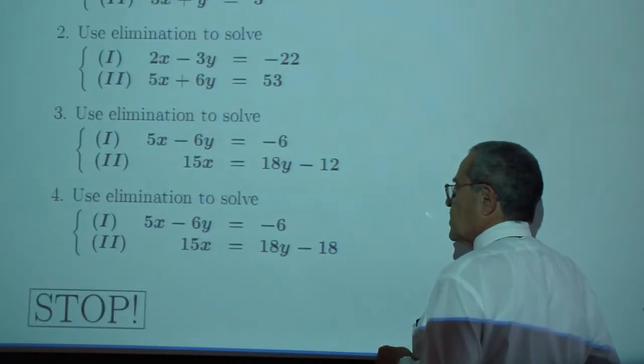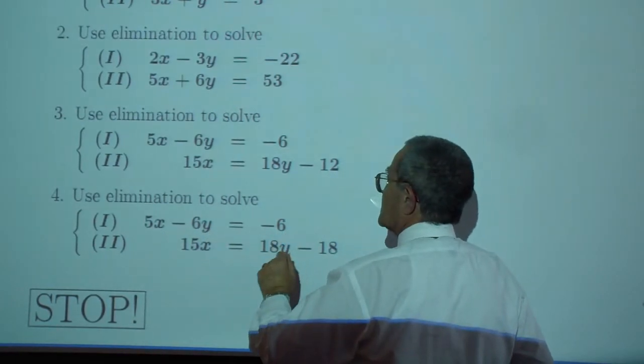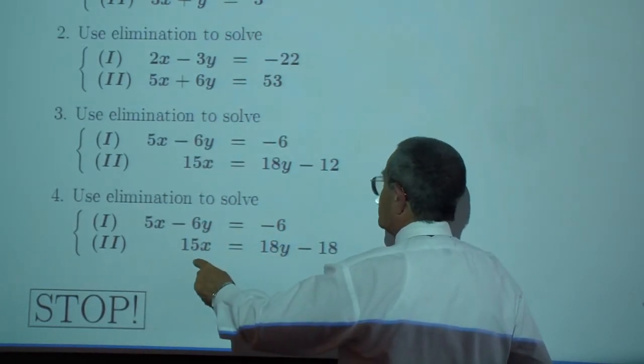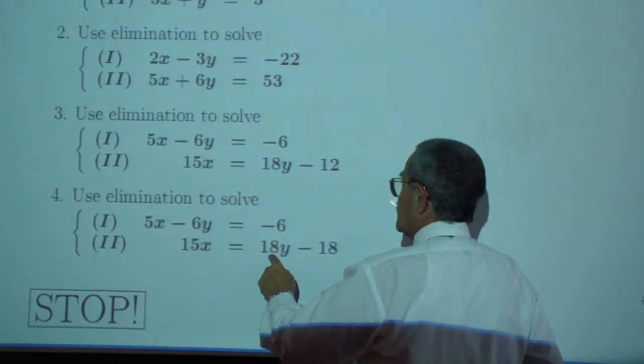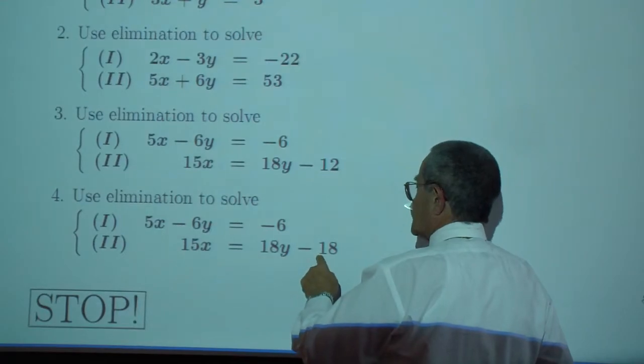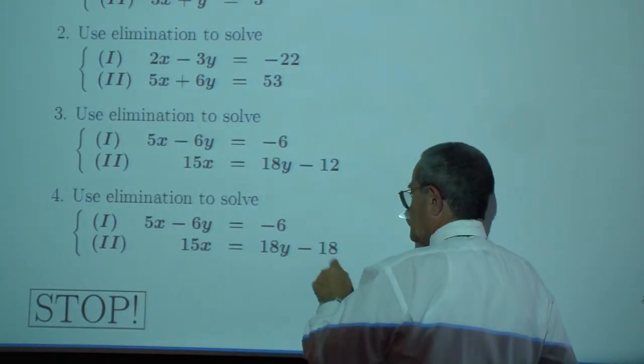Solve by elimination. 5x minus 6y is negative 6. 15x equals 18y plus 18, minus 12, minus 18.